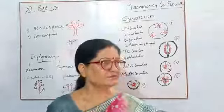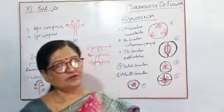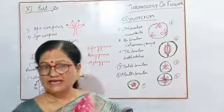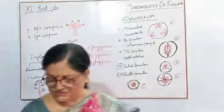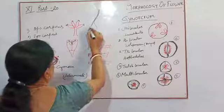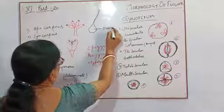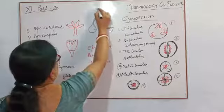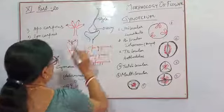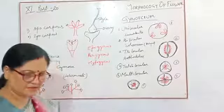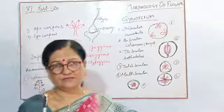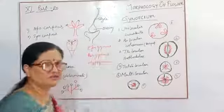Gynoecium means the female part of the flower. So the female part of the flower consists of the ovary, style, and stigma — one female unit called a carpel. There will be the ovary, style, and stigma. It is present on the thalamus, which also contains all other floral parts. This is the primary structure of a Gynoecium.